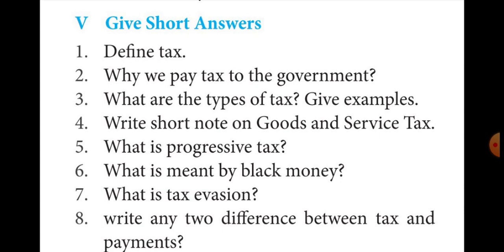The last question: write any two differences between tax and payments. Refer to page 326, the tabular column on differences between tax and other payments. Mark the first and third points: first — tax is compulsory to the government without getting any direct benefits; fee is the payment for getting any service. Third — tax is a compulsory payment; fee is a voluntary payment.